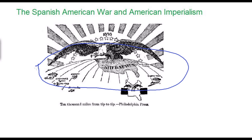We're going to focus on changing policy concerns from continental to intercontinental concerns, and look at growing American concerns about competition with European nations. Finally, we'll focus on why and how the United States begins to expand from North America into the Caribbean, Central and South America, as well as into the Pacific and East Asia in the closing decades of the 19th century.